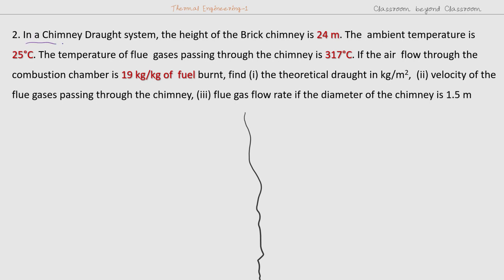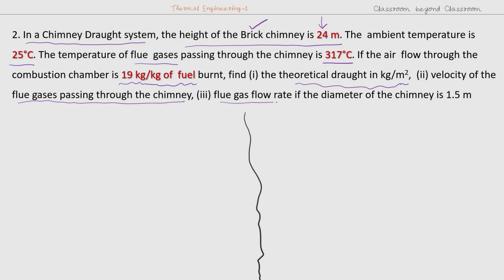This is our second problem. In a chimney drought system, the height of the brick chimney is 24 meters. The ambient temperature is 25 degrees centigrade and temperature of the flue gas passing through the chimney is 317 degrees centigrade. The air flow through the combustion chamber is 19 kg per kg of fuel — that is Ma. We have to find out the theoretical drought in kg per meter squared, velocity of the flue gases passing through the chimney V, and also flue gas flow rate if the diameter of the chimney is 1.5 meters.